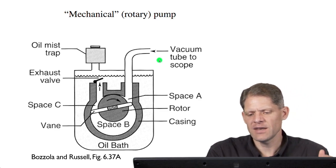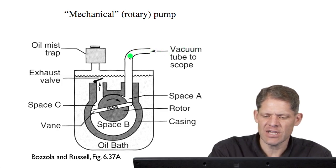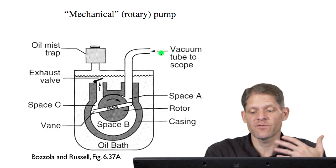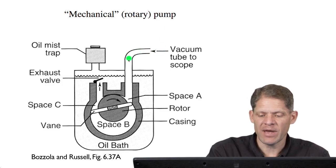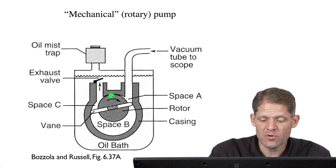The anatomy of this pump is that the microscope column would be attached, for instance, to this input tube. And so gases from the microscope column as it's first being evacuated would pass through here. Now, within the mechanical rotary pump,